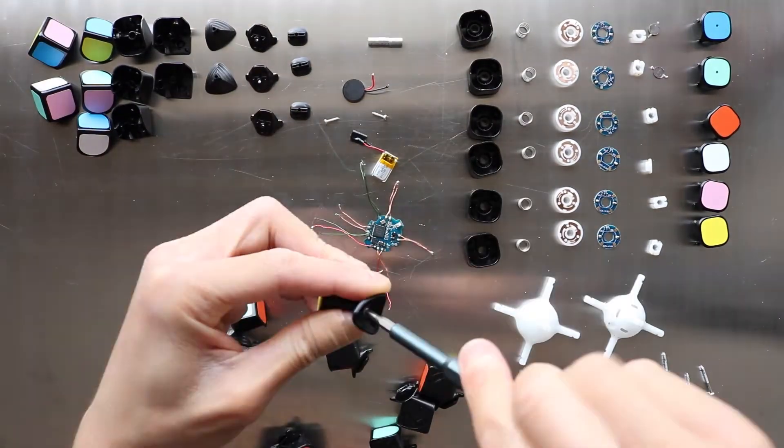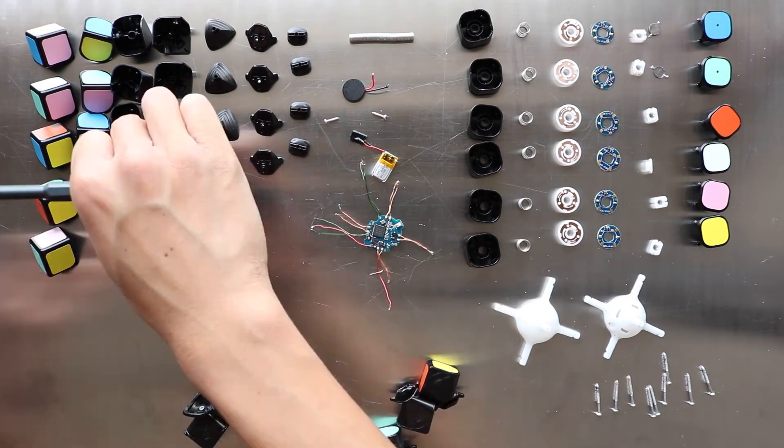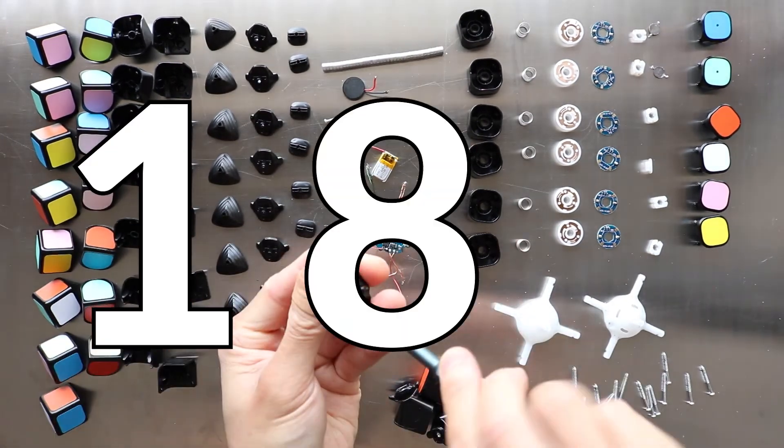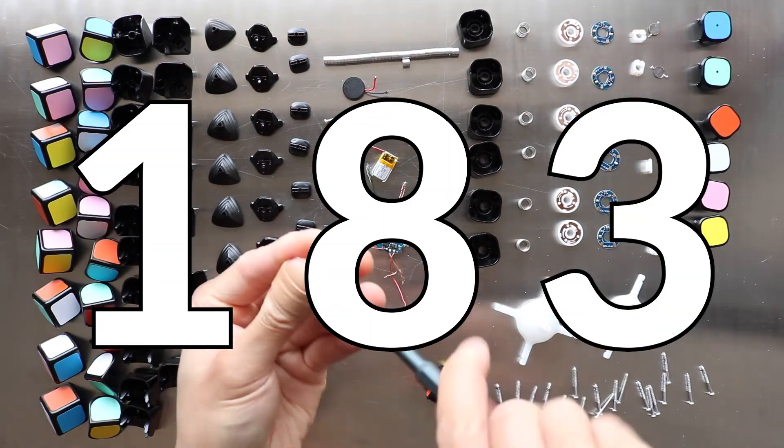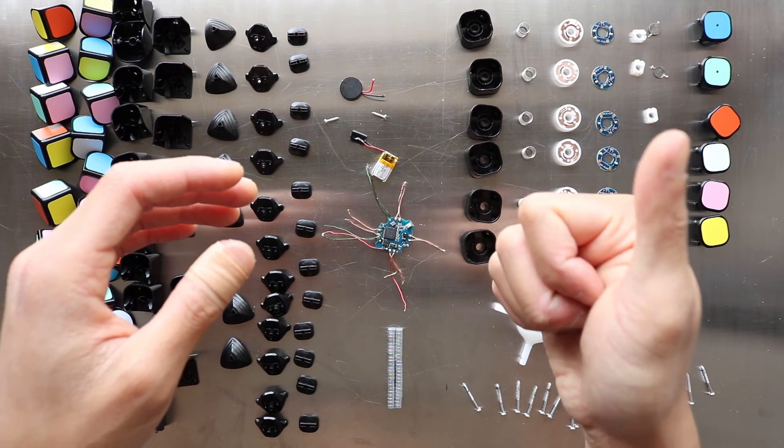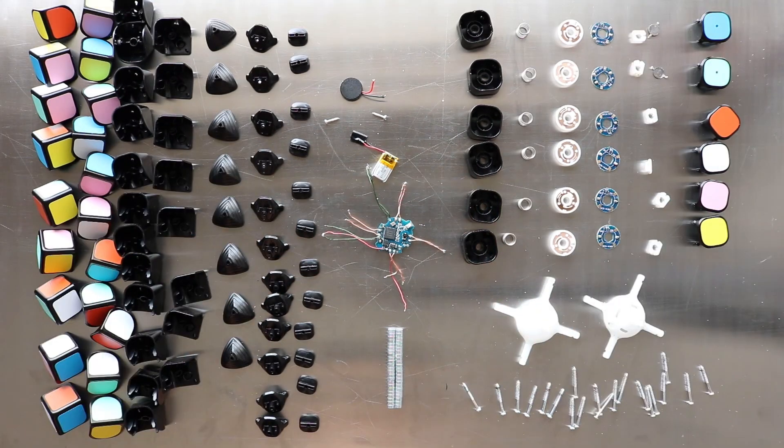That's every single component and everything I can tell you about this cube without boring you to death already. There are in total 183 components packed in this cube, which is pretty crazy. Please leave a like and consider subscribing if you enjoyed the video. I have torn down other products which you can find in the cards here. I will see you next time.